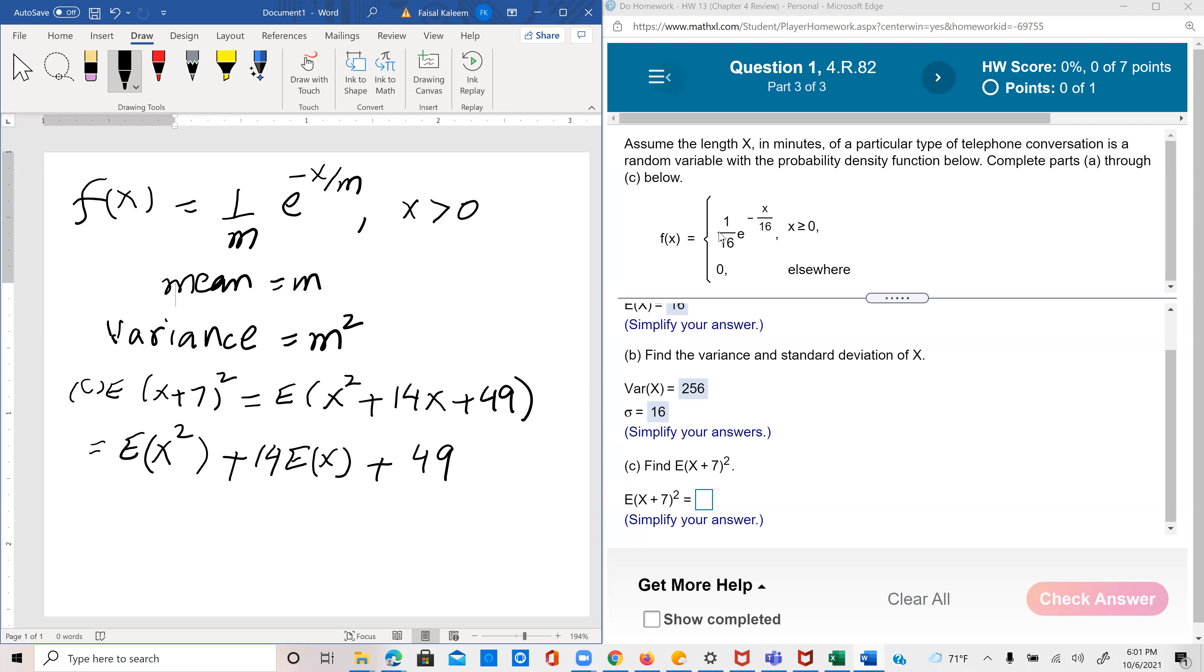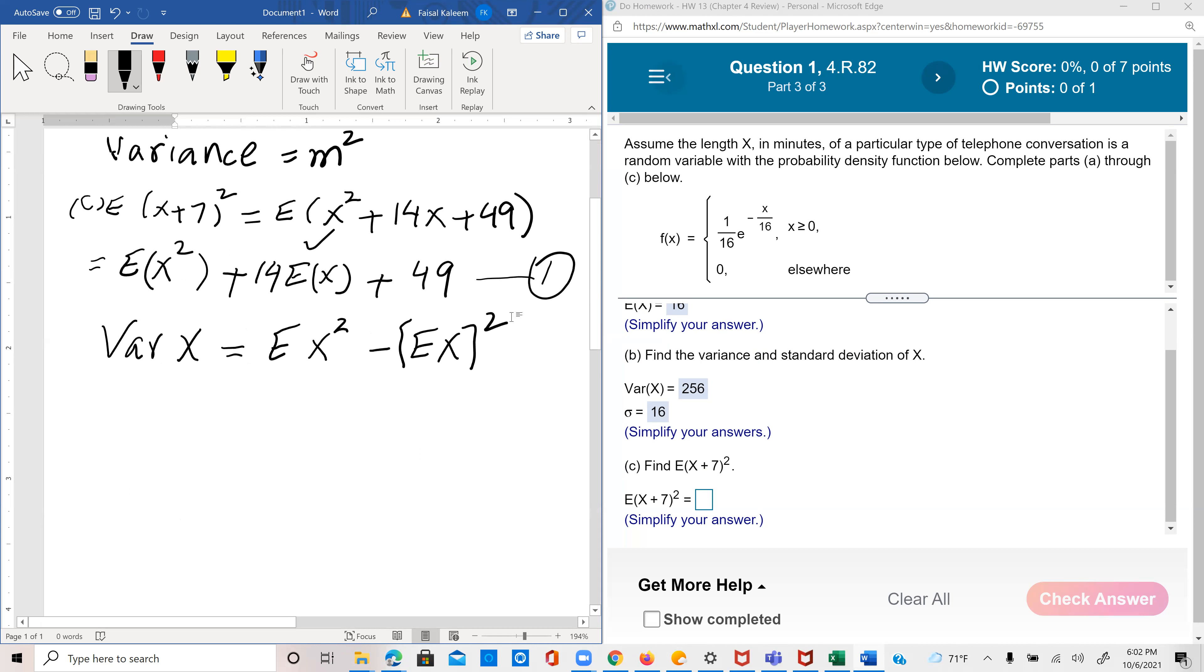And we have E of x. So the question is how to get E of x square. And to get E of x square, we use, let's call this equation number one, we use the fact that variance of x is equal to E of x square minus E of x whole square. That's true for any random variable, not just exponential.